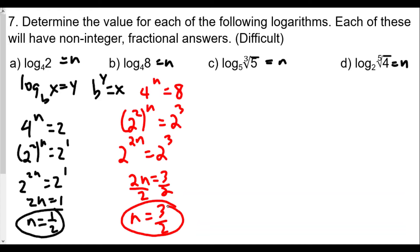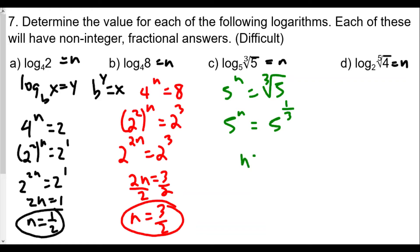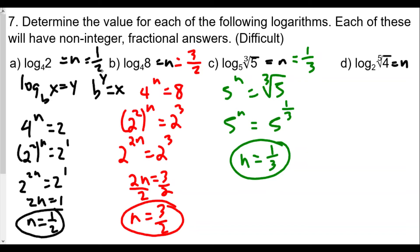That means log base four of eight equals three over two. For 7c, we have five to the n equals the cube root of five. Using our knowledge of fractional exponents and radicals, the cube root of five is really five raised to the one-third power, where the index becomes the denominator of the exponent. So for 7c, n is equal to one-third, meaning log base five of the cube root of five is one-third. So the answers so far are: 7a is one-half, 7b is three over two, and 7c is one-third.